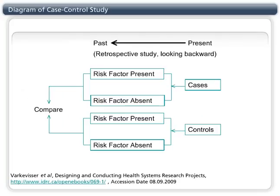Here is a diagram of the case-control study design. At the present time, cases and controls are identified and past exposures are measured. The study determines the odds of having the exposure among cases and controls and then compares these groups to determine the association between the exposure and the outcome.